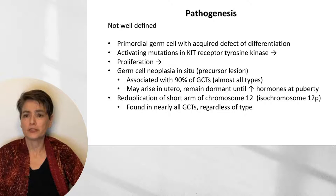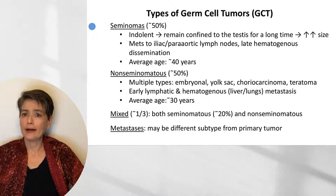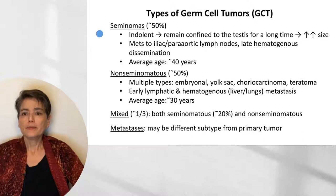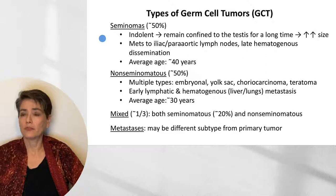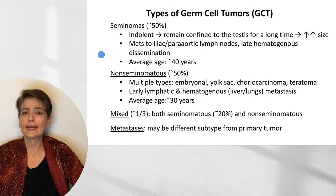Seminomas account for about half of germ cell tumors, and non-seminomatous tumors account for another half. Seminomas tend to be indolent and can remain confined to the testis for a long time, and may reach a very large size before diagnosis. When they do metastasize, they tend to metastasize to iliac and periaortic lymph nodes, and it is only with late disease that we see hematogenous dissemination. They tend to present at an average age of about 40 years, which is about a decade later than non-seminomatous tumors.